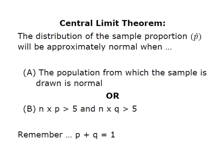First, the population from which the sample is drawn is normal. Remember, normal populations give us normal samples. If we don't know that our population is normally distributed, or we might know that our population is not normally distributed,